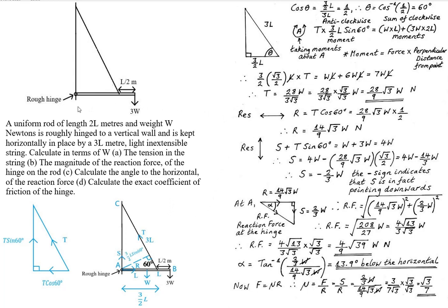In this problem we have a uniform rod of length 2L meters. The uniform rod has a weight of W Newtons and is roughly hinged to a vertical wall at one end, and is kept horizontally in place by a 3L meter light inextensible string. Light meaning it has no weight, and inextensible meaning that the string will not stretch due to the tension.